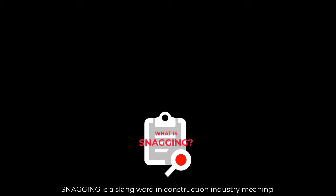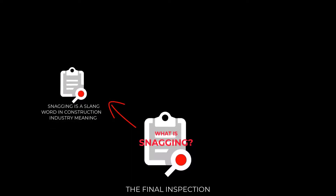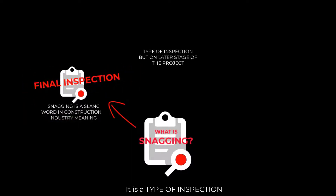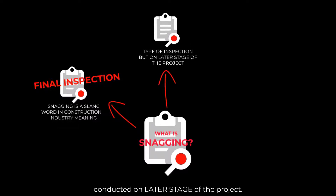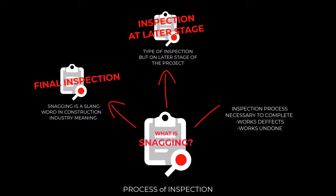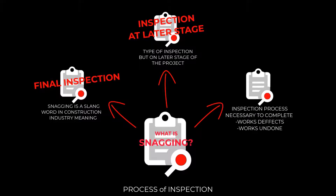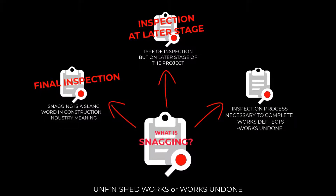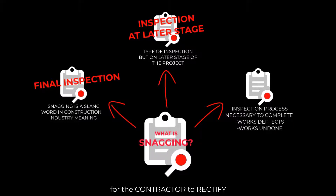What is snagging? Snagging is a slang word in the construction industry meaning the final inspection. It is a type of inspection but it is on the later stage of the project. It is also a process of inspection necessary to complete the work — covering defects, finish works, or works undone — for the contractor to rectify.